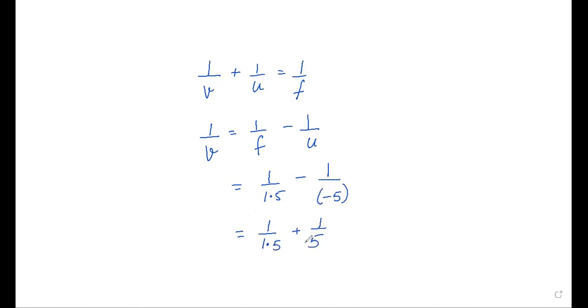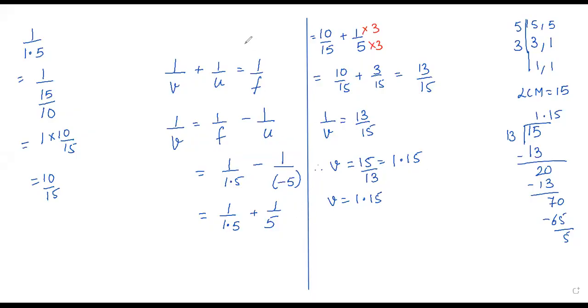How to solve this? Here we have 1.5 and here 5. What should we do? We should find LCM. So, formula we have applied. Now we are stuck here because there is a decimal. So, what will we do first? 1 upon 1.5, we will convert. 1.5 can be written as 15 upon 10. Now, this is 1 divided by 15 upon 10. So, we will take the inverse of this part. This becomes 10 upon 15. Now what do you have? 10 upon 15 plus 1 upon 5.